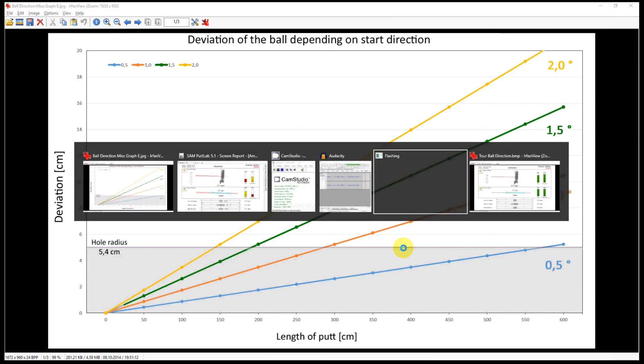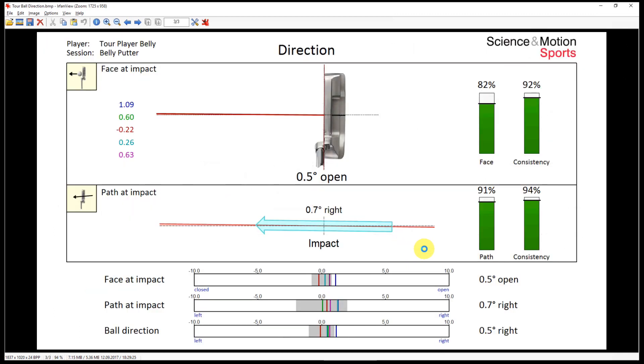If we now look at the tour data, then we will see normally that the face at impact is roughly square to the target. So on average, it should not deviate too much. For this player, deviation is 0.5 degrees open.